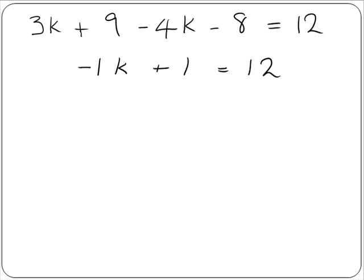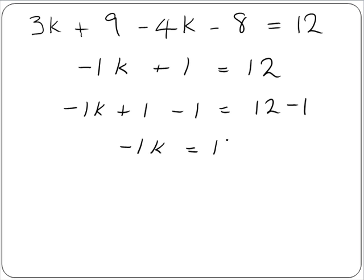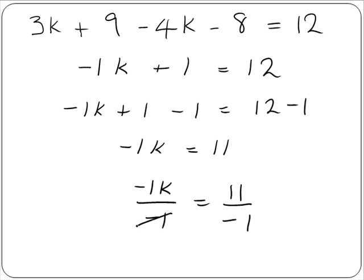Now we are going to subtract 1 from both sides. So we have minus 1k equals 11. Now to get this to be just k, what we are going to do is divide both sides by minus 1. So we have minus 1k divided by minus 1, which leaves us with just k. And on this side we are left with minus 11.